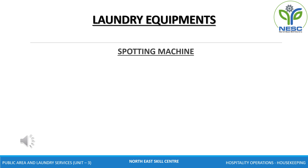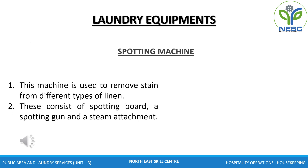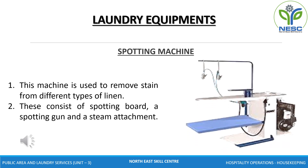Spotting machine. This machine is used to remove stains from different types of linen. The process of removing hard stains from linen is known as spotting. The spotting machine consists of a spotting board, a spotting gun and the steam attachment. A spotting board is a table that is partly perforated. The surface is hard and made of stainless steel or any other material resistant to acid, alkaline and stain-removing agents.